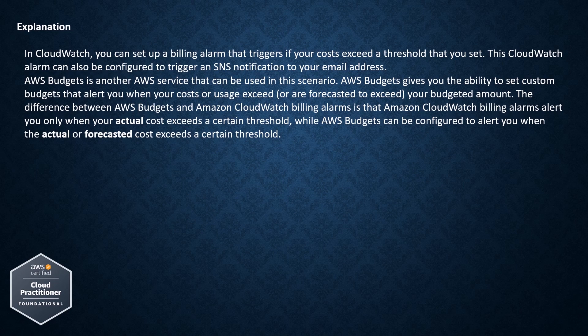AWS Budgets is another AWS service that can be used in this scenario. AWS Budgets gives you the ability to set custom budgets that alert you when your costs or usage exceed, or are forecasted to exceed, your budgeted amount. The difference between AWS Budgets and Amazon CloudWatch billing alarms is that CloudWatch billing alarms alert you only when your actual cost exceeds a certain threshold, while AWS Budgets can be configured to alert you when the actual or forecasted cost exceeds a certain threshold.